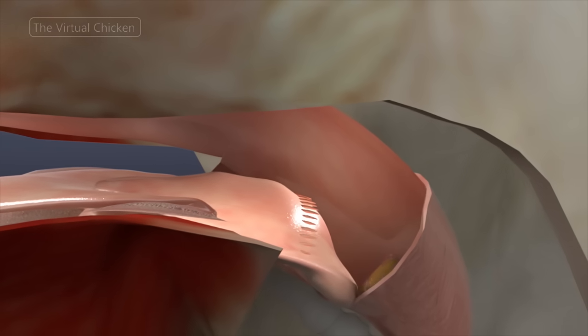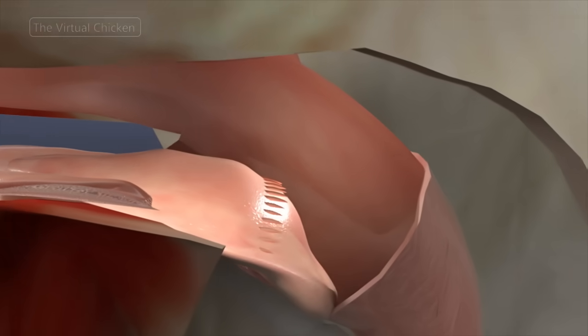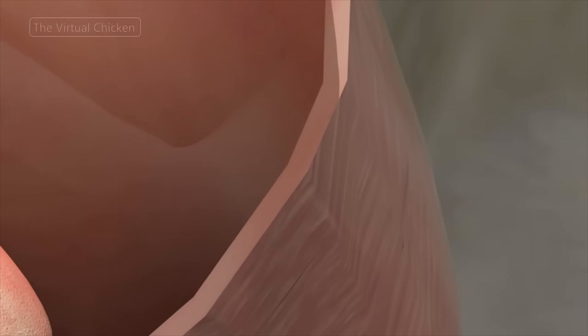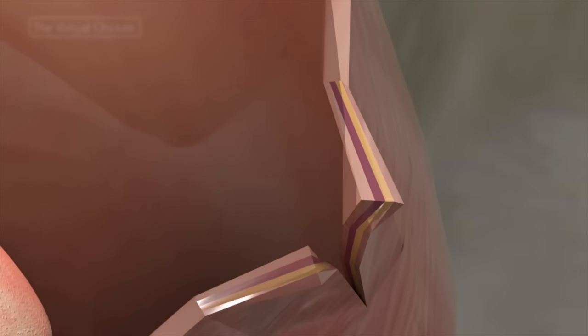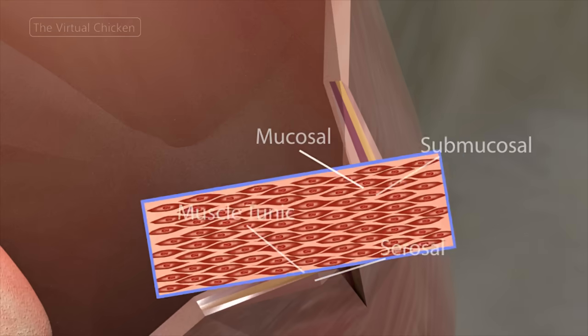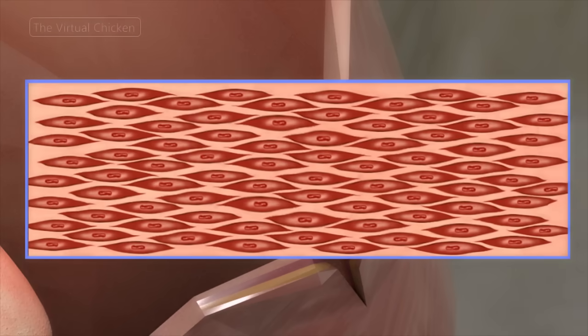The avian esophagus allows birds to swallow their food whole. Its walls are made up of four layers: mucosal, submucosal, muscle tunic, and the serosal layer, which contains only smooth muscle cells.